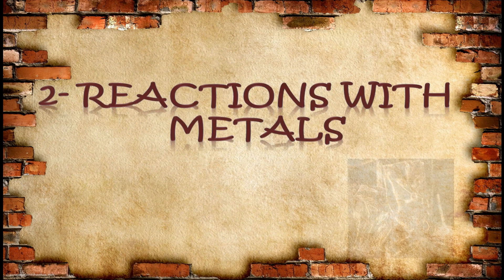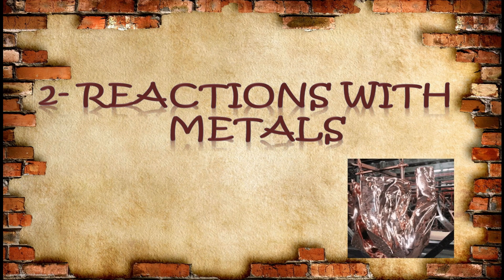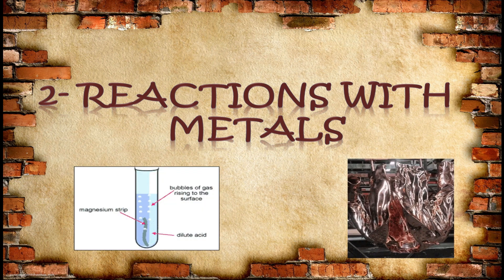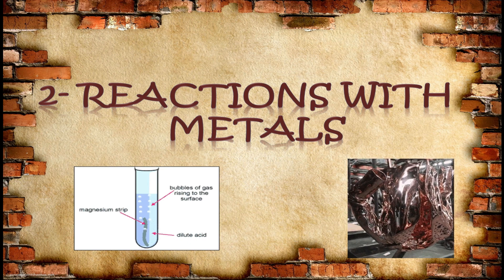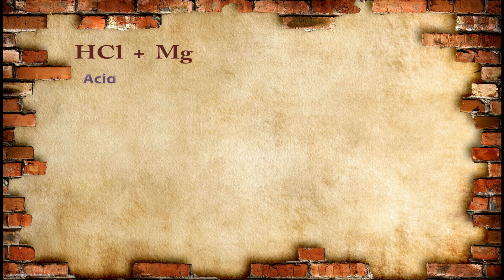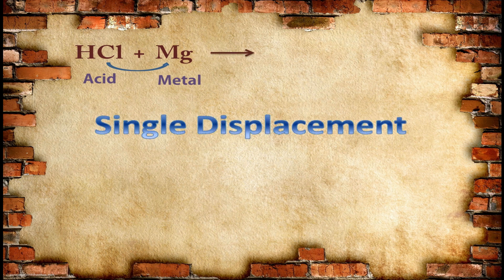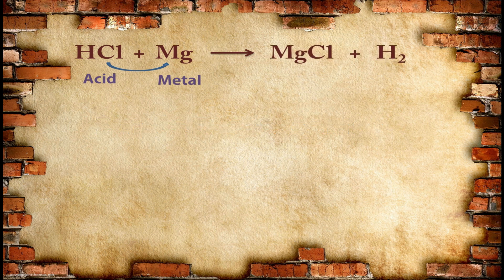Now let's look at the next reaction of acid — reaction with metals. In this reaction a particular gas is released. HCl is an acid and magnesium is a metal. When HCl reacts with magnesium, the negative radical of the acid combines with the metal through a single displacement reaction — replacement of one ion is taking place. The formula of the products will be MgCl and H₂. Here hydrogen gas is released. MgCl is the formula of salt and H₂ is the formula of hydrogen gas.